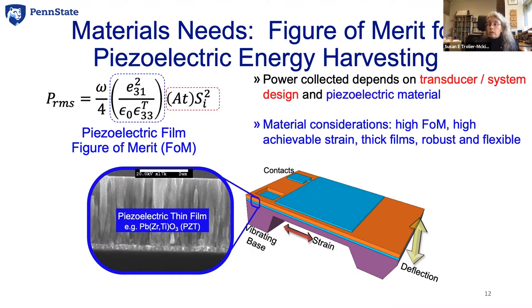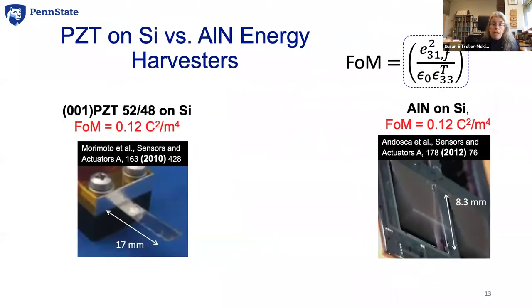Most vibrational energy is at fairly low frequencies, so a thin film converter needs a thin support structure for large bending and a heavy weight hung from the end. The power you can get out depends on the e31 coefficient squared divided by the relative permittivity. Comparing PZT — excellent piezoelectric properties but a large dielectric constant, giving a figure of merit of about 0.12 C²/m⁴ — to aluminum nitride on silicon — much weaker piezoelectric coefficient but very small dielectric constant — the figures of merit turn out to be essentially identical.